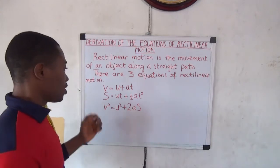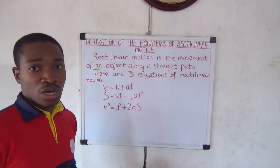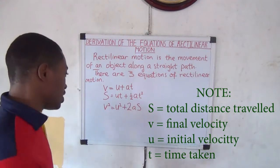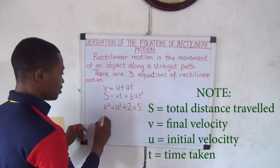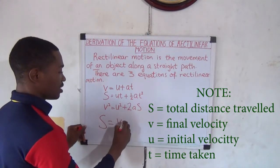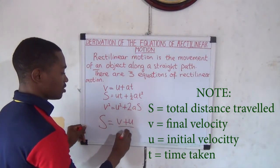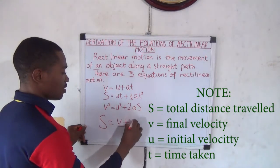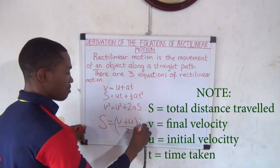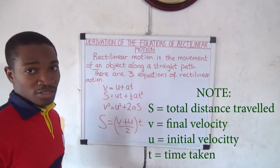Take note that there is one other equation we normally use along with all of these. That is: total distance traveled is equal to final velocity plus initial velocity, divided by 2, multiplied by time taken.